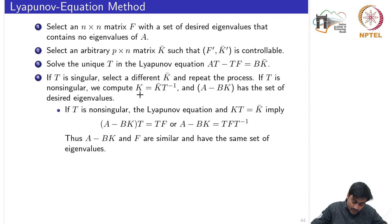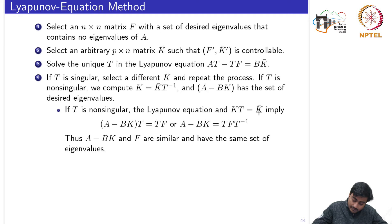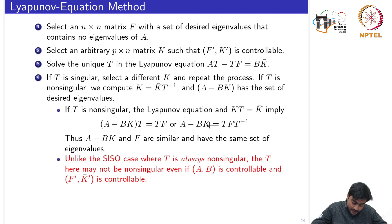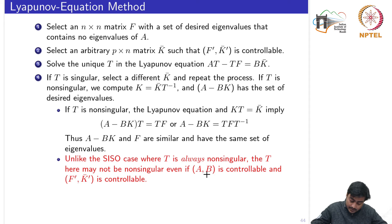If T is non-singular, we can compute K and ensure the closed loop state matrix has the desired eigenvalues. The proof follows by substituting K̄ = KT into the Lyapunov equation, yielding the closed loop state matrix as T·F·T⁻¹ — a similarity transformation — which ensures the closed loop matrix has the same eigenvalues as F. However, for the multivariable case it might not always be possible to ensure T is non-singular, even if both pairs A, B and (Fᵀ, K̄ᵀ) are controllable.